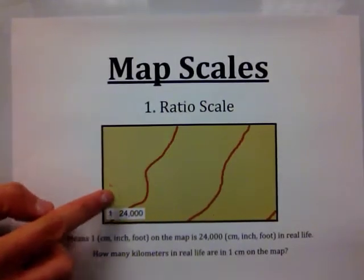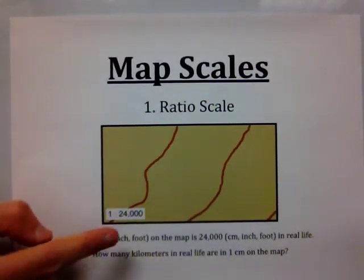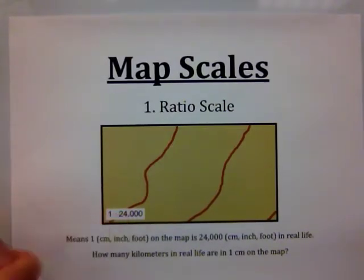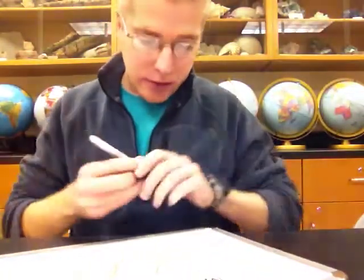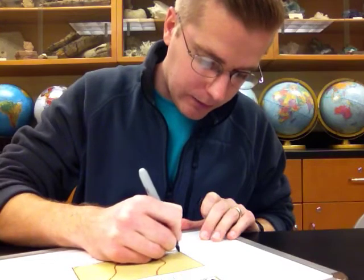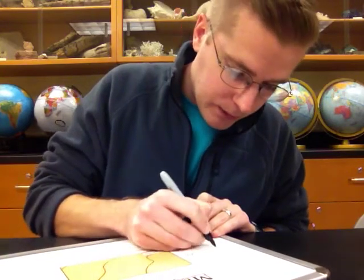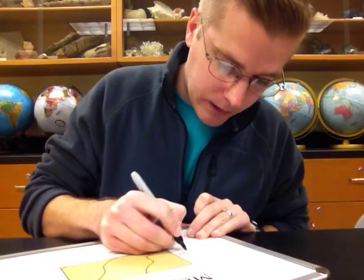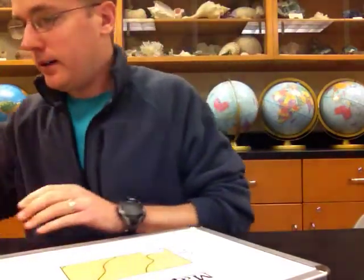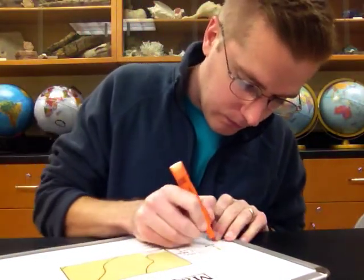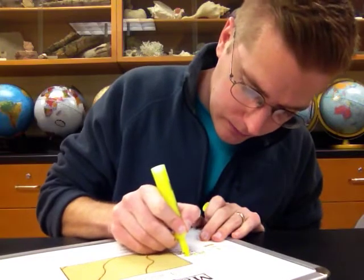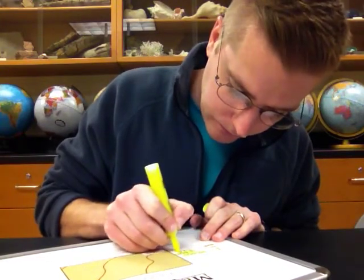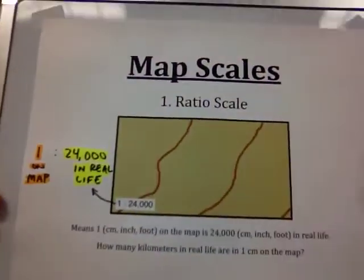So if we measure 1 centimeter on the map, that's equal to 24,000 centimeters in real life. If we measure 1 inch on the map, that is equal to 24,000 inches in real life. Let's make note of that so we can have it easily available. I'm going to rewrite 1 to 24,000 with 'on map' and 'in real life' labeled — 1 on the map is 24,000 in real life.